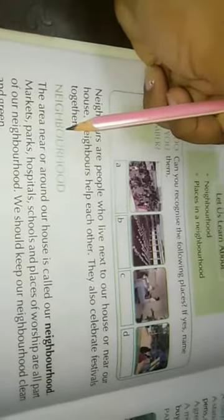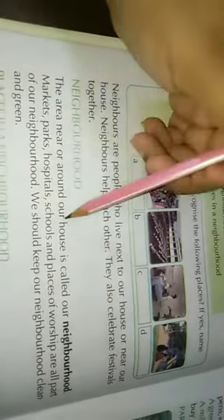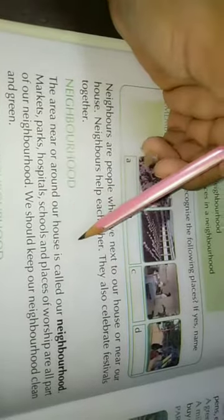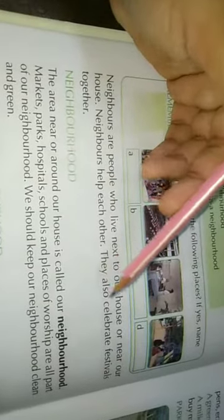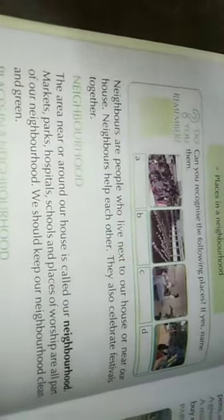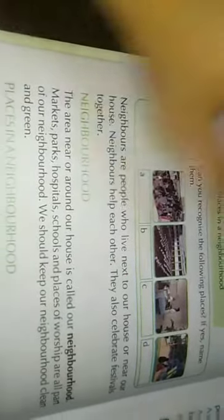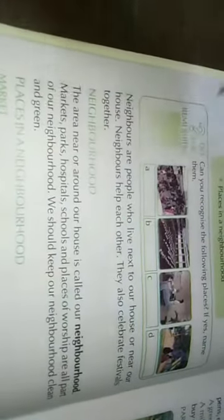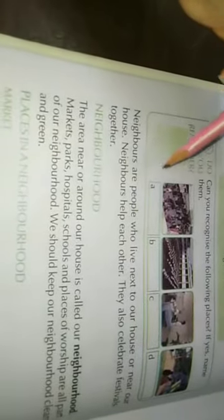Our next topic is neighborhood. The area near or around our house is called our neighborhood. Jo area humare house ke around hota hai, matlab humare house ke aaspaas ka jo area hota hai, usko hum kehte hain neighborhood.